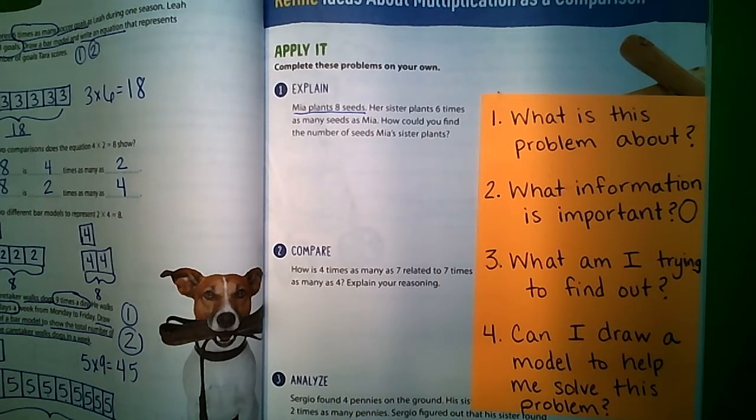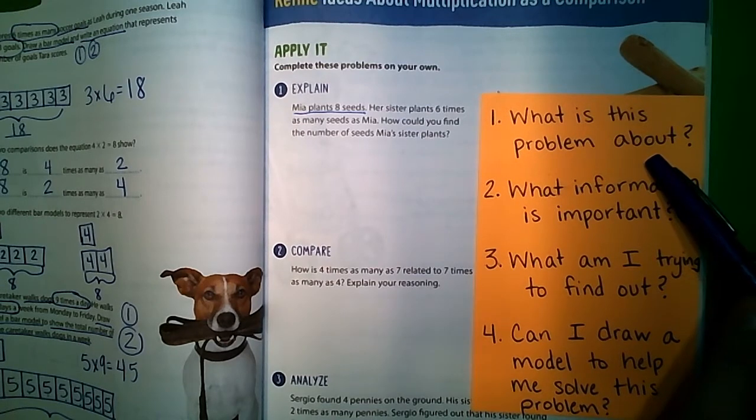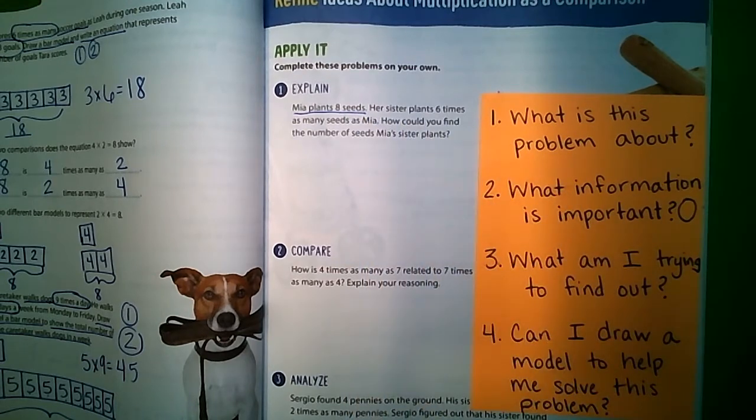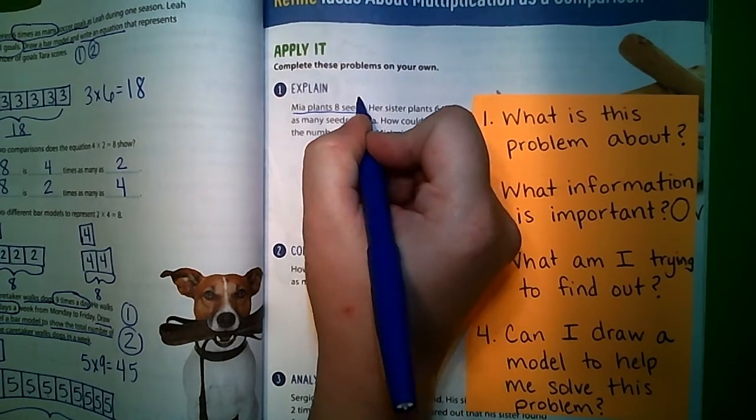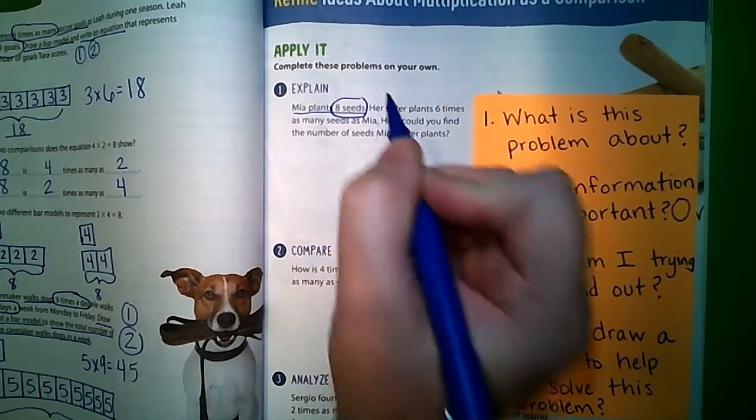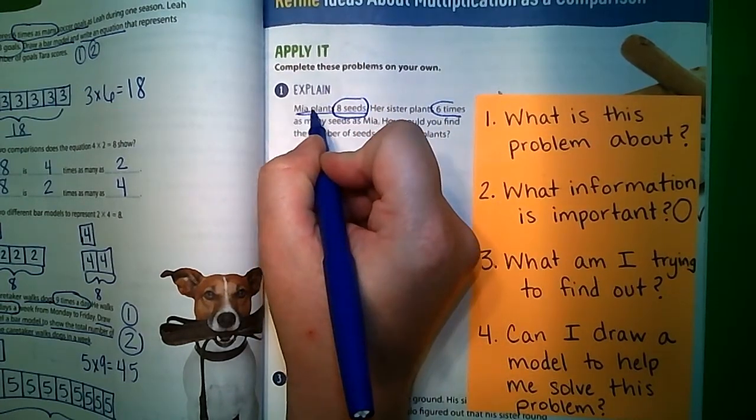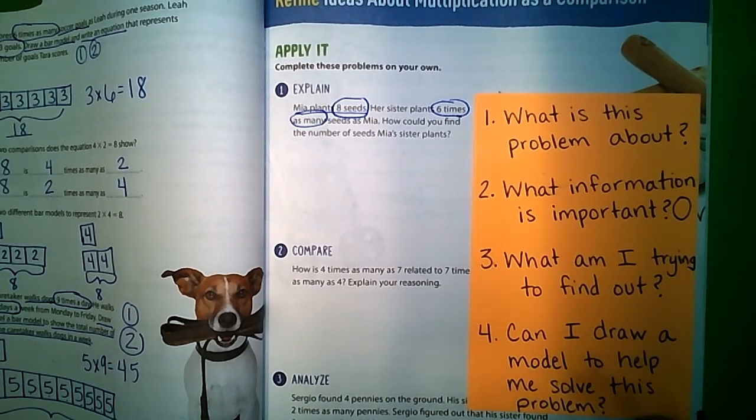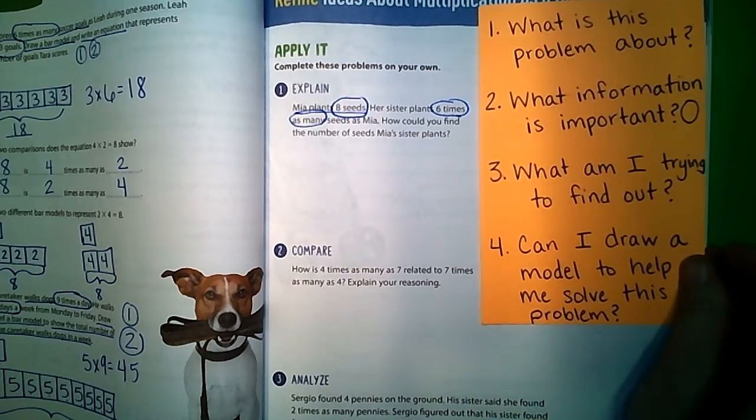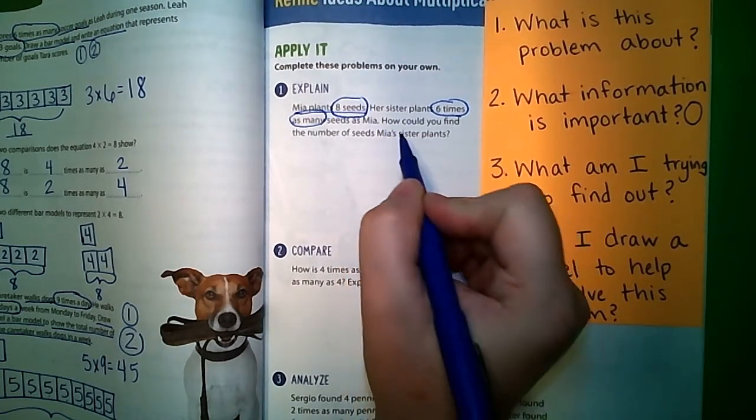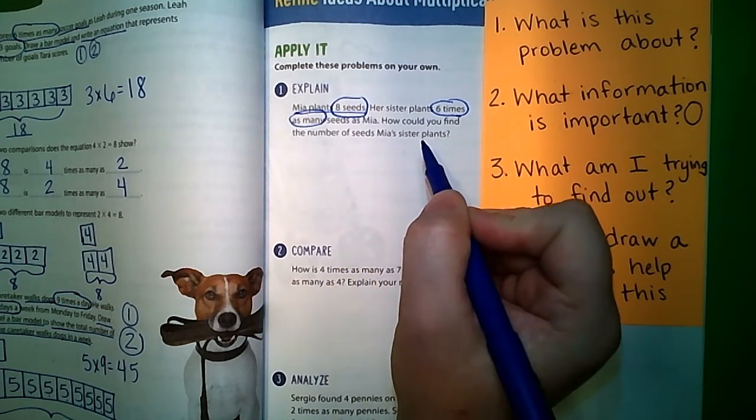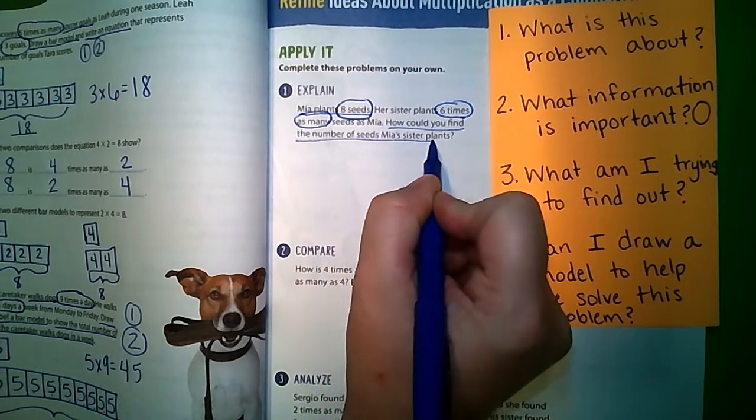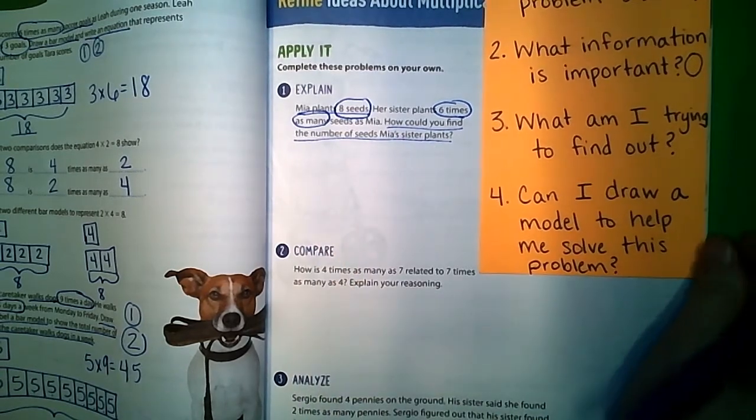So what is this problem about? Well, it's about two sisters planting some seeds. What information is important? Eight seeds is important, and then six times as many is also important. And then, what am I trying to find out? Well, I'm trying to find out how could we find the number of seeds Mia's sister plants.